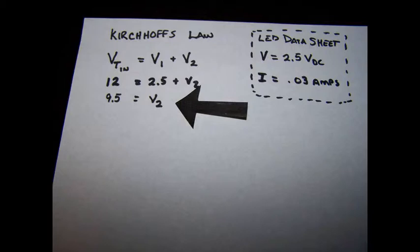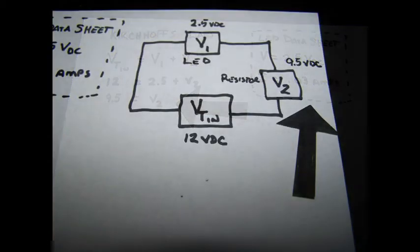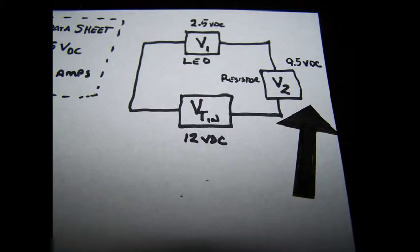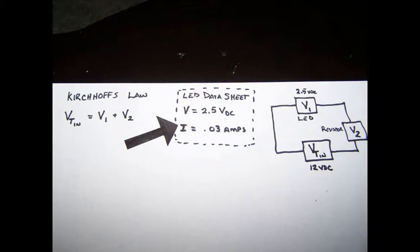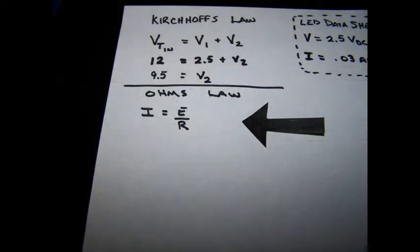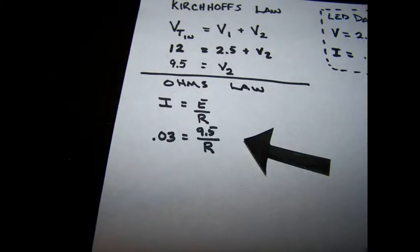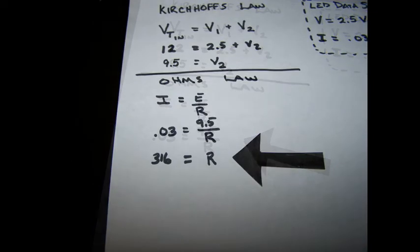We fill in our known values, and we solve for V2. And we get 9.5 volts will be dropped across our resistor. To figure out the value of my resistor, I need at least two pieces of data. I already have the voltage dropped, so let's look up the current that's going to be flowing across it. The data sheet says that this LED is rated at 0.03 amps. This means less current than that, the LED will be dimmer, more current than this, might destroy the LED. Once again, now I have two pieces of data. I can plug that into this formula, and it will tell me what size resistor will allow that much current to flow. 316 ohms was the answer.